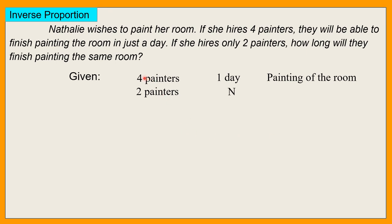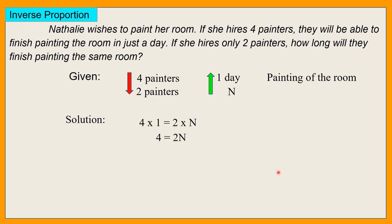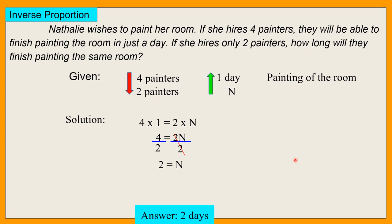Since this is an inverse proportion, multiply na natin — equate natin. Ito dapat ay tataas yung number of days. Solution: 4 times 1 is equal to 2 times N. Tandaan, multiply na natin kasi inverse ito. 4 times 1 is equal to 2 times N, and then 4 is equal to 2N. Divided by 2, divided by 2 — cancel natin yung 2. 2, therefore, is equal to N. Kapag dalawang painters, matatapos nila ng dalawang araw. Bumaba yung number of painters, dadami yung number of days — 2 painters, 2 days.